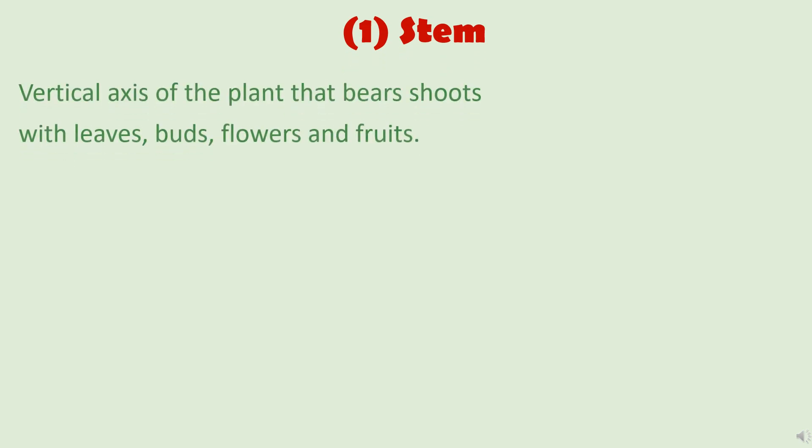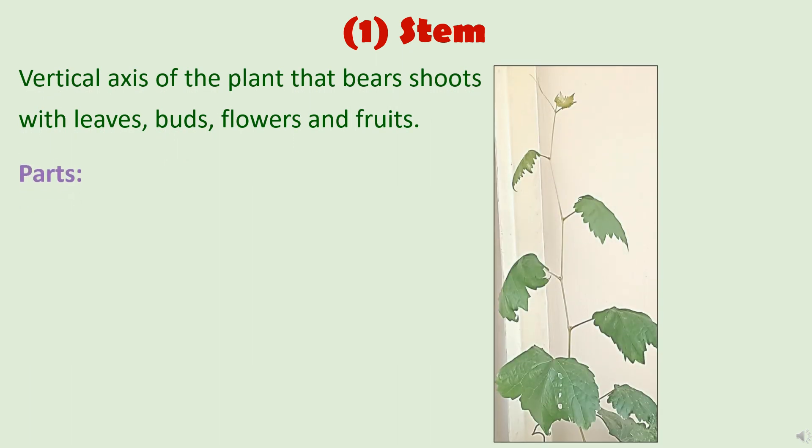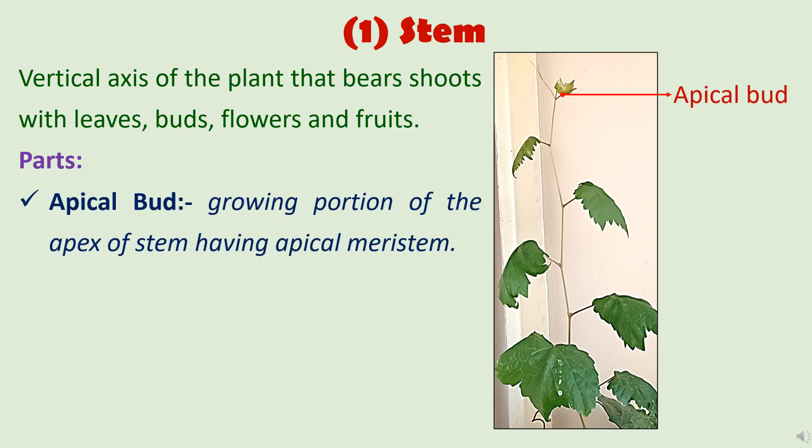Now the parts of the shoot system. First is the stem. Stem is the vertical axis of a plant that bears shoots with leaves, buds, flowers, and fruits. The stem has different parts. First is the apical bud. The apical bud is the growing portion at the apex of a shoot or stem. It bears special types of tissues called meristematic tissues, which are capable of producing the vegetative as well as the reproductive organs of a plant.